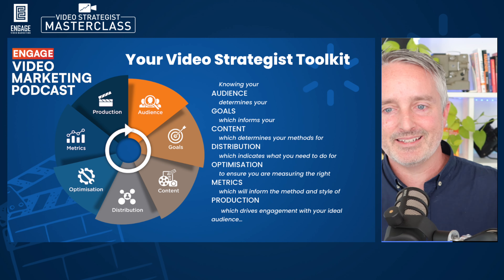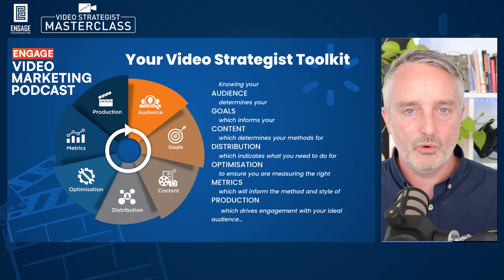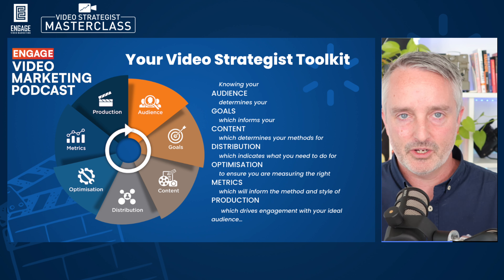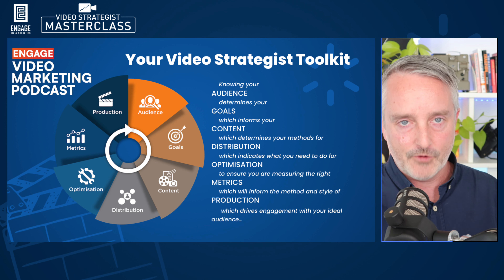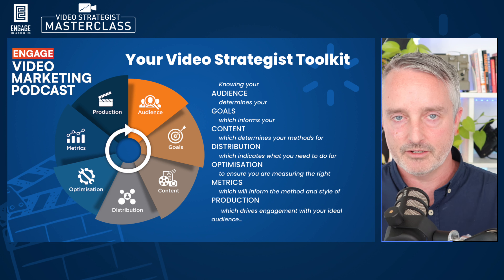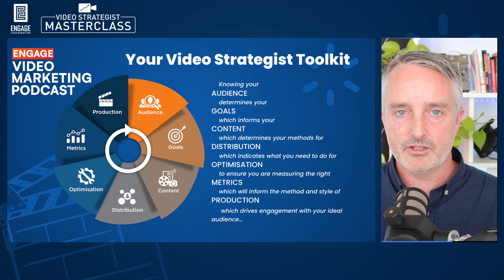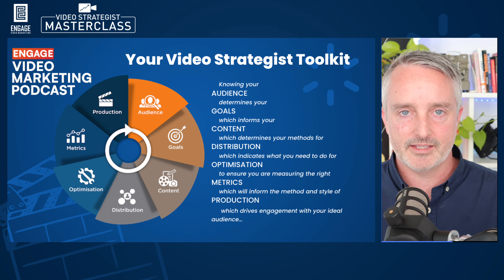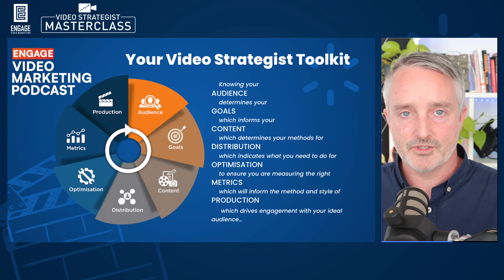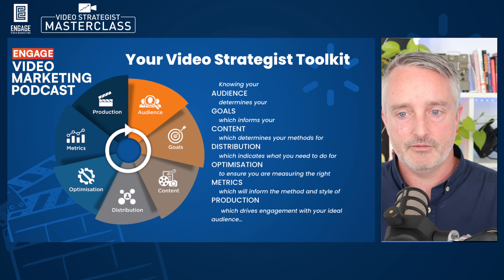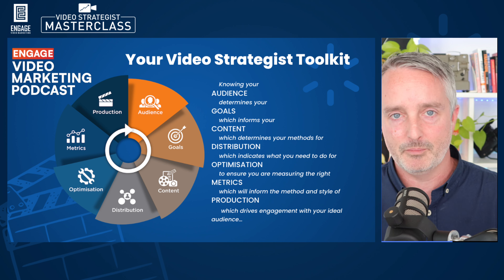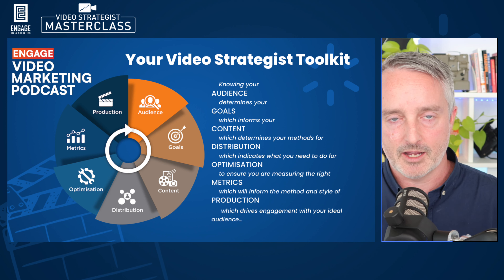Looking at the total of all seven elements, which I outlined in the last episode, goals is the second element. We first need to clearly understand who the audience is that we're trying to reach. From there, we determine the goals we're trying to influence in a video strategy. Then the rest of the elements cover content, distribution, optimisation, metrics, and production — but we'll save those for the coming episodes.